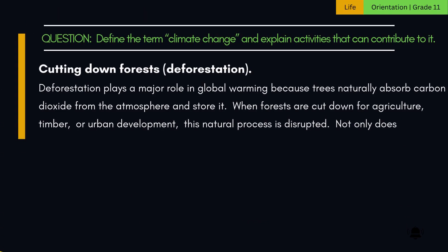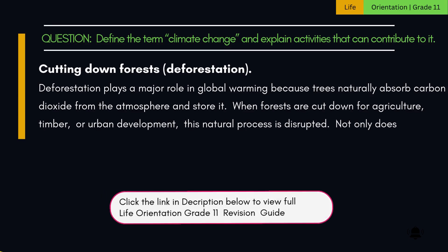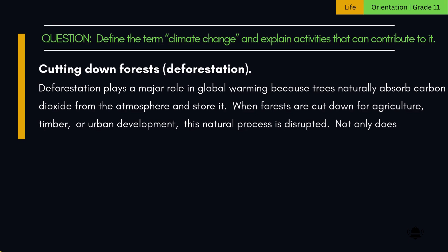2. Cutting down forests — deforestation. Deforestation plays a major role in global warming because trees naturally absorb carbon dioxide from the atmosphere and store it. When forests are cut down for agriculture, timber, or urban development, this natural process is disrupted.